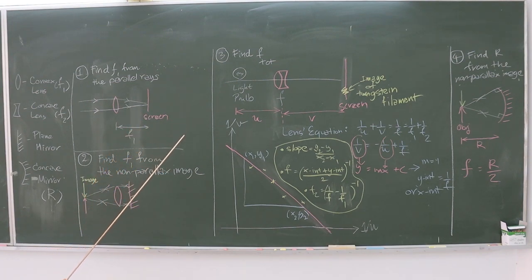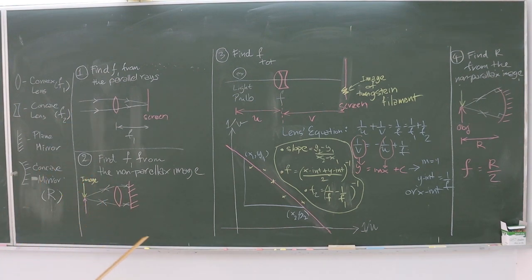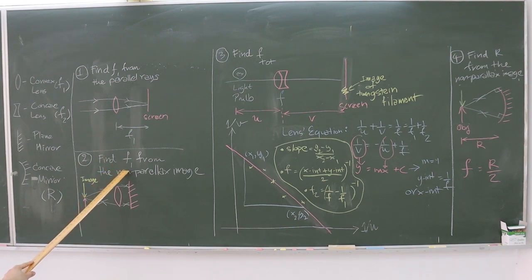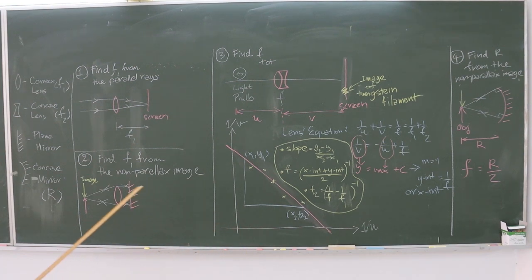Therefore, this is how to determine the focal length using parallel rays. Part 2 is still about finding F1 but uses the non-parallax image method. The non-parallax image is the kind of image when it is exactly at the same position as the object. You will see both stick together at all times, no matter which angle of view you look at them from.